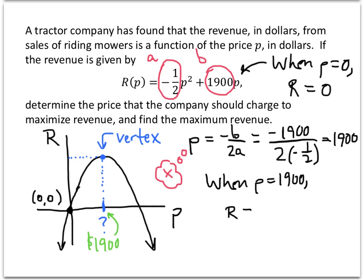Well, we have a formula right back up here that tells us how to figure out r if we know what p is. And now we know what p should be. It should be 1,900. So r is going to equal negative one-half times 1,900 squared plus 1,900 times 1,900.